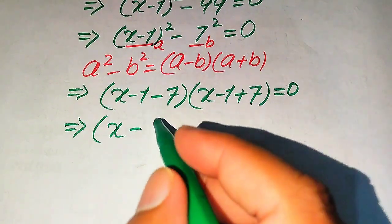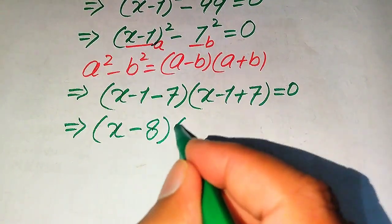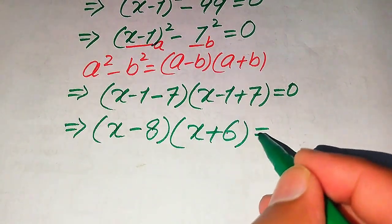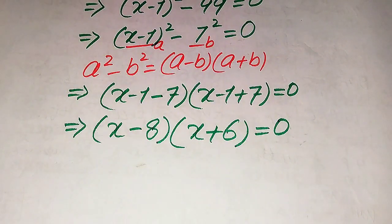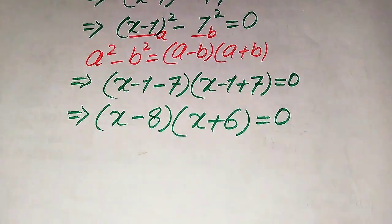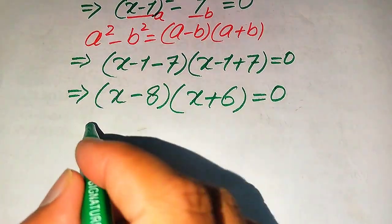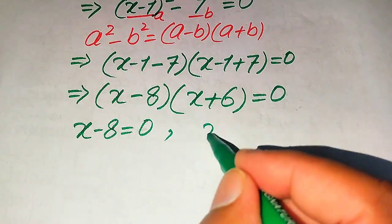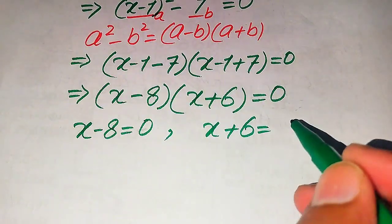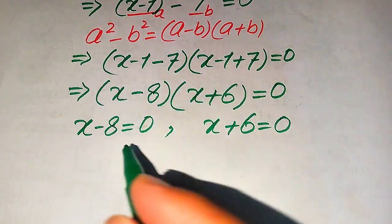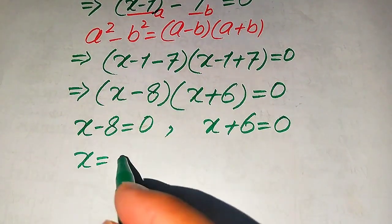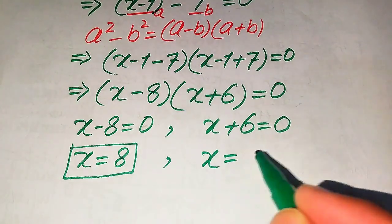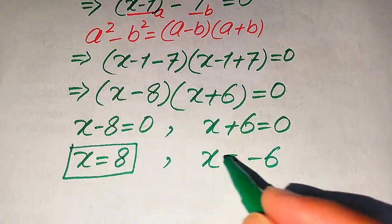We split the equation into two cases. The first case gives us x minus 8 equals 0, and the second case gives us x plus 6 equals 0. From the first case we easily get x equals 8, and from the second case we easily get x equals minus 6.